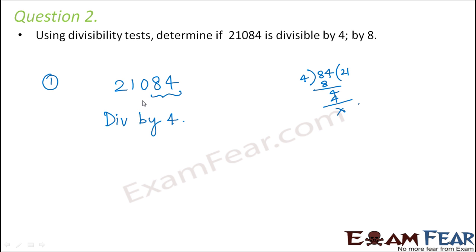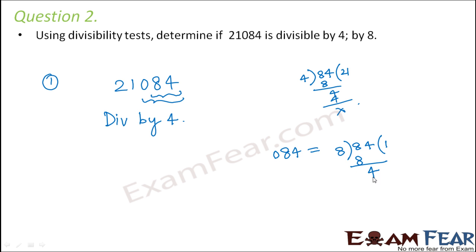What about 8? To check divisibility by 8, we have to see if the last three digits are divisible by 8 or not. The last three digits are 084, which also means 84, because 0 at the beginning has no value. When you divide 84 by 8, you get a remainder of 4. That means 84 is not divisible by 8. Therefore, this number as a whole is also not divisible by 8.